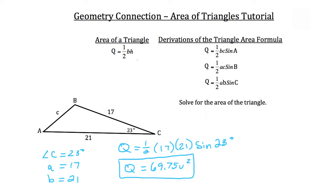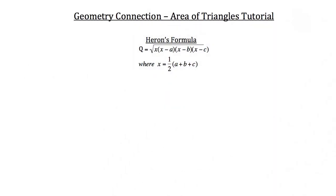Now I'm going to teach you about Heron's formula. Heron's formula states that Q, the area of a triangle, is equal to the square root of X times the quantity X minus a, times the quantity X minus B...